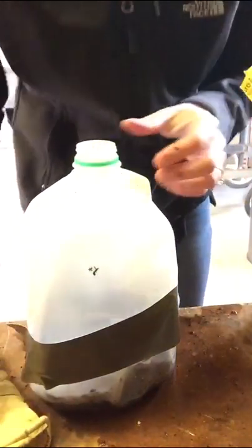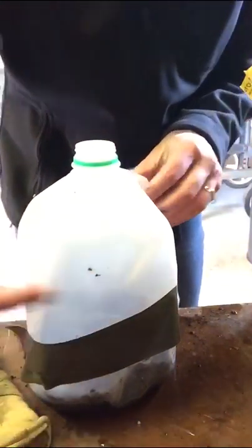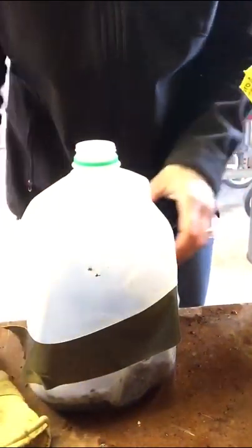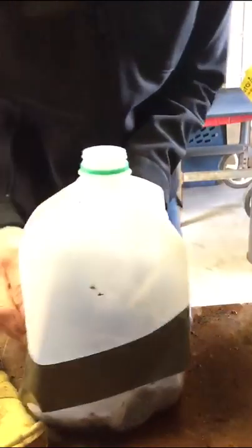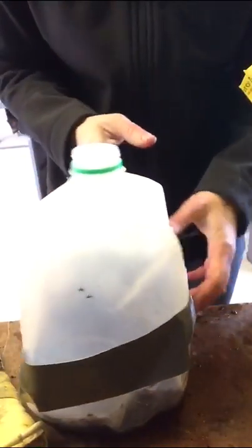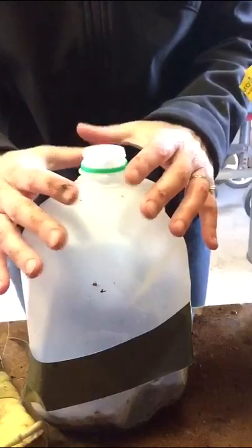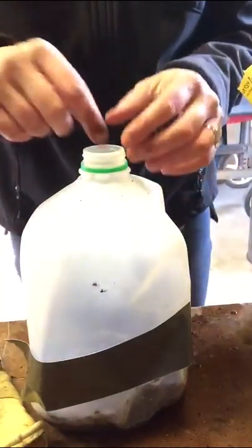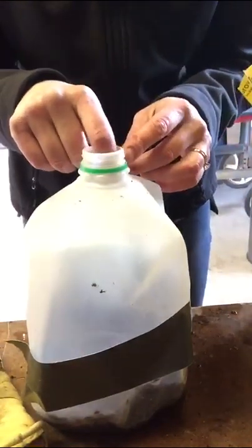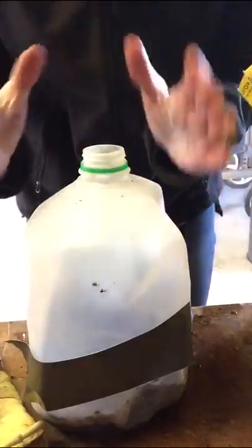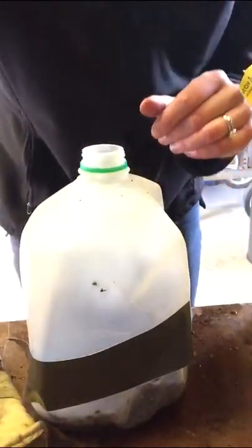And then get a Sharpie and label tomatoes or whatever kind you did, whatever seed you planted. And then the best part is, you guys can just leave this out. It made its own little greenhouse. So you've already got the water in it. Add a little bit if you notice it getting dry. Otherwise, you've got your own greenhouse you can leave outside.